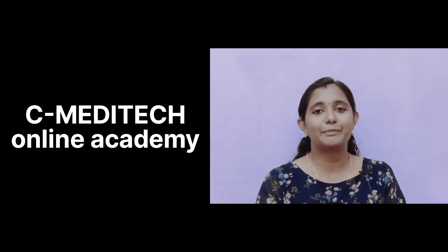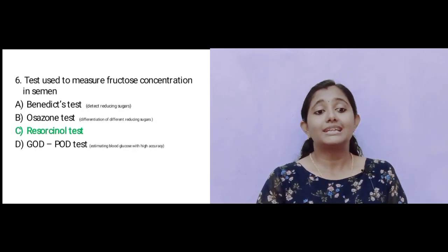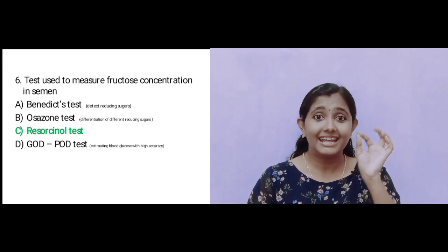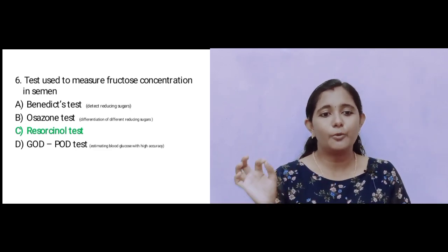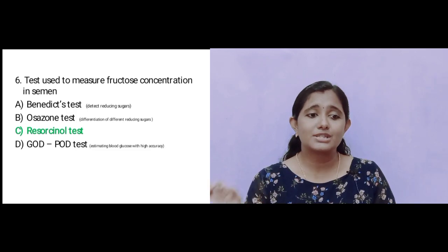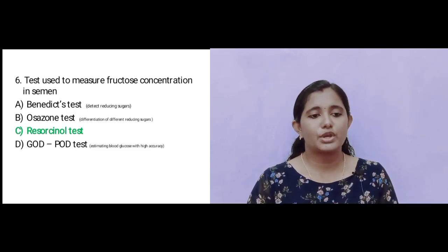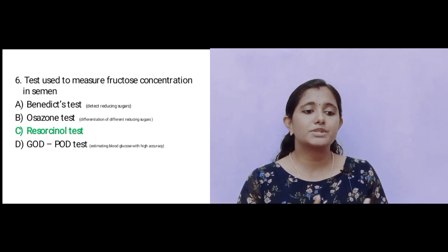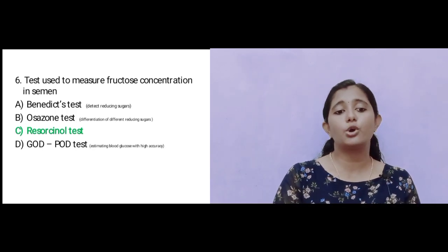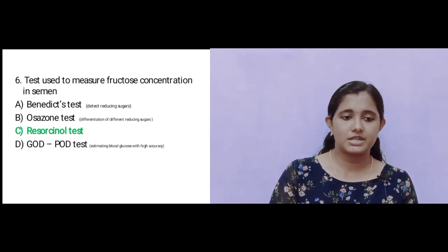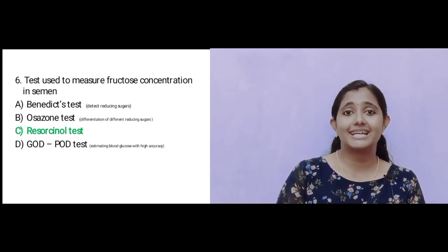Question number 6: Test used to measure fructose concentration in semen — Option A: Benedict Test; Option B: Osazone Test; Option C: Resorcinol Test; Option D: GOD-POD Test. The answer is Option C: Resorcinol method.